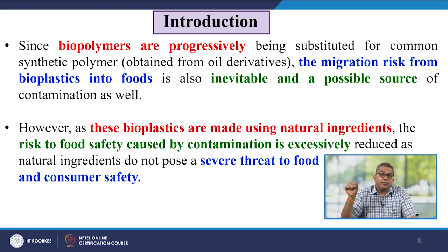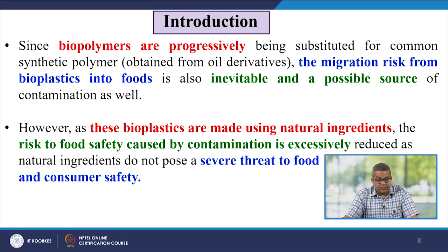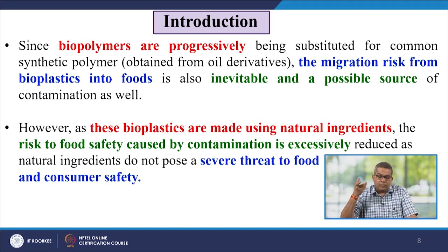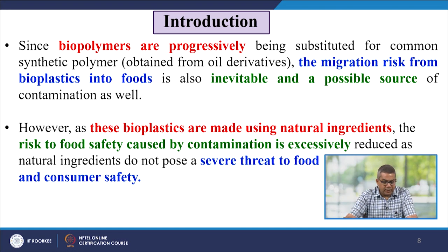Since biopolymers are progressively being substituted for common synthetic polymers, which are usually derived from oil derivatives, biopolymers are gaining more and more impetus. The migration risk from bioplastics into food is also inevitable and a possible source of contamination. However, as these bioplastics are made using natural ingredients, the risk to food safety caused by contamination is greatly reduced, as natural ingredients do not pose a severe threat to food and consumer safety.